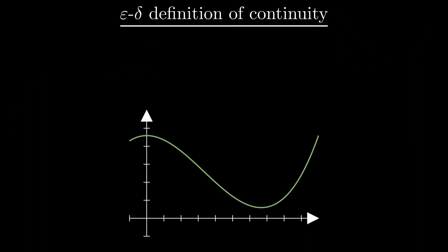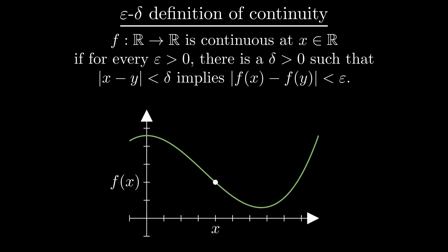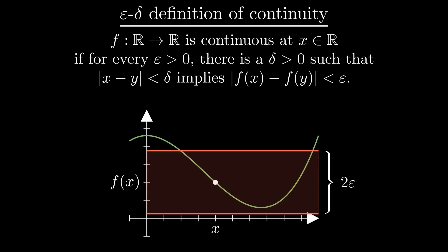So let's start with the epsilon-delta definition of continuity. The map f is continuous at x if for every epsilon range around f of x, we can find a delta range around x that maps entirely into the epsilon range.